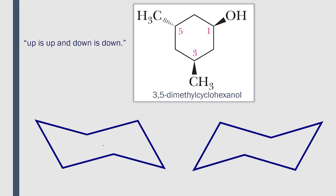To draw the chair conformations, first we need to keep in mind that up is up and down is down. What we mean by up is the dark wedges, and down means broken wedges. So the hydroxyl group is up because it's a dark wedge, and the methyl group at carbon 3 is also up because it's a dark wedge. The methyl group at carbon 5 is down the plane because it's a broken wedge. So we have: up, up, down.